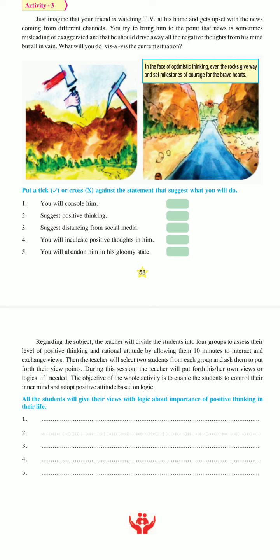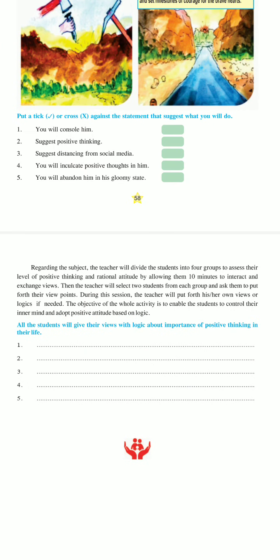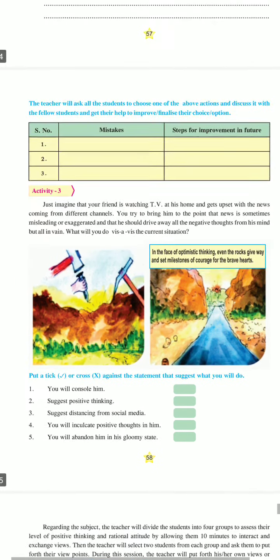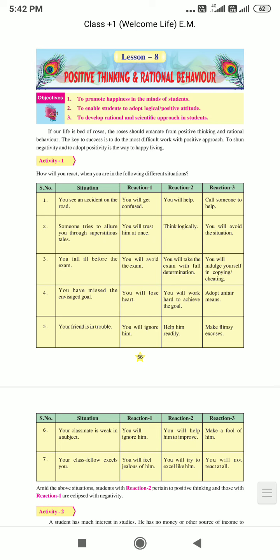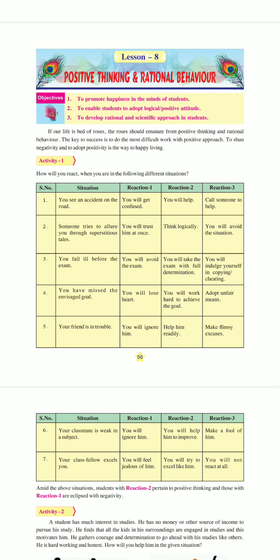Abandon means to leave someone. Gloomy means sad. So these are a few situations and you have to write what you will do in each of them. These are the three activities under this chapter on Positive Thinking and Rational Behavior. You will solve everything in the book, write what you think, and then later it can be evaluated. That is all for the day.